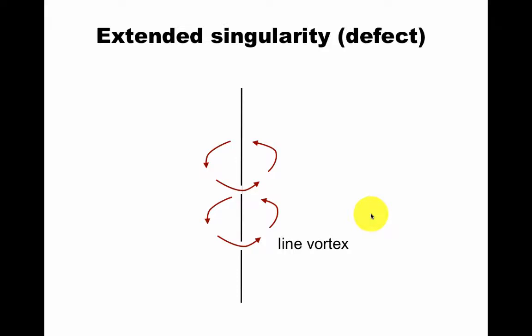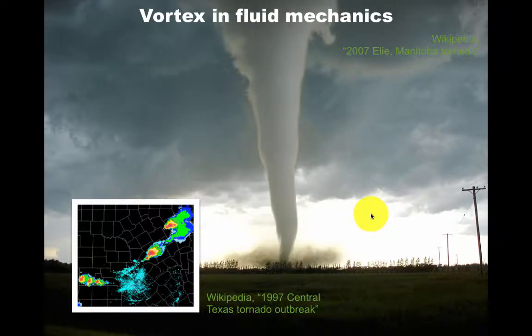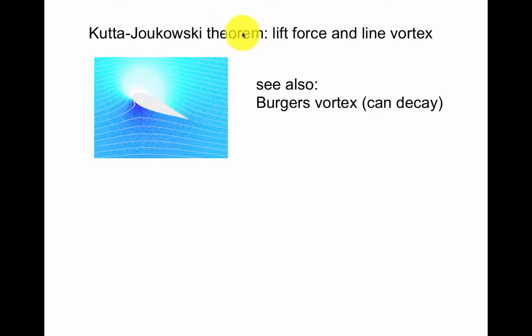These are very important in fluid mechanics. For example, here's a tornado. I didn't get a good picture, but I was in Texas for the 1997 tornado outbreak around Austin. So there's the theorem in aerodynamics that the lift force of an airfoil has to do with whether there's a line vortex. Some of these vortices can also decay. For example, this Burgers' vortex is a kind like that.